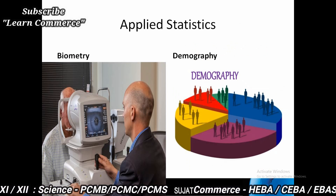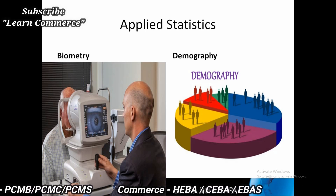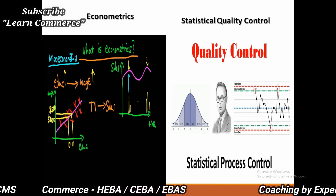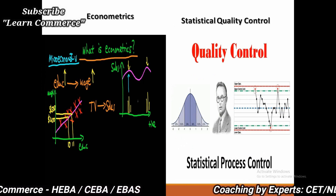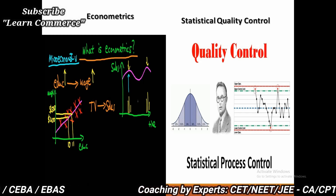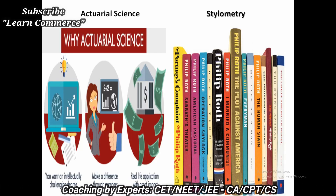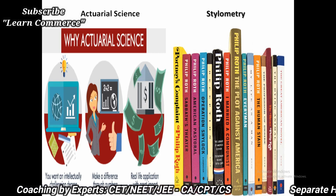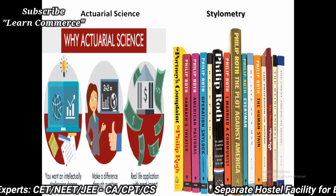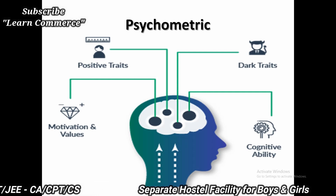Some branches of applied statistics are: biometry or biostatistics, which deals with problems in biology; demography, the study of human population; econometrics, a statistical tool to prove or disprove the theories of economics; statistical quality control, which is the control of quality of manufactured goods before marketing; actuarial science, which is statistics in the field of insurance; stylometry, which is statistics in literature; and psychometry, which deals with psychological problems.